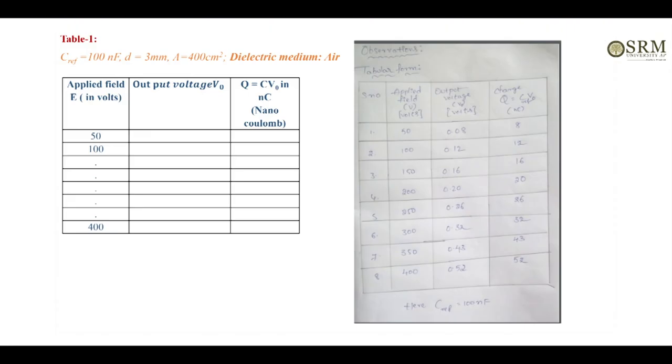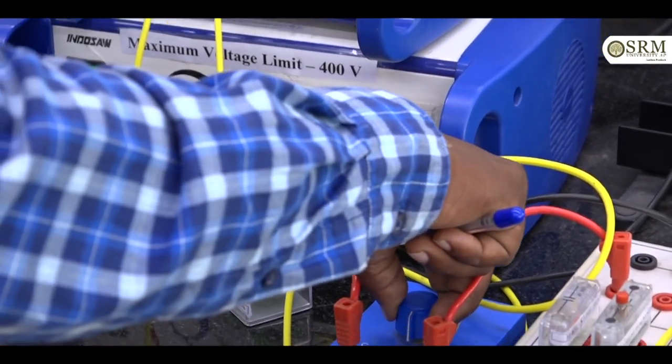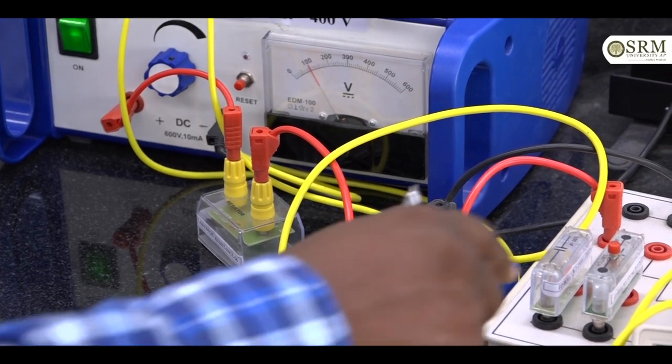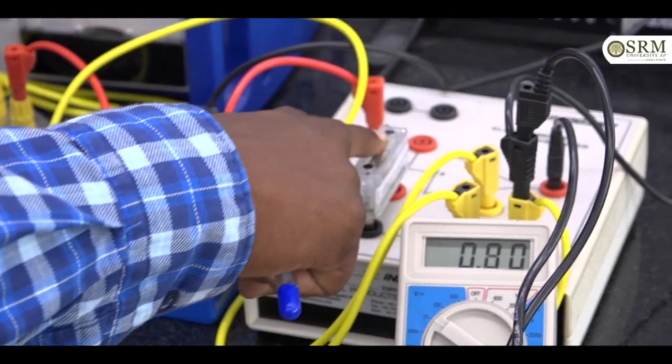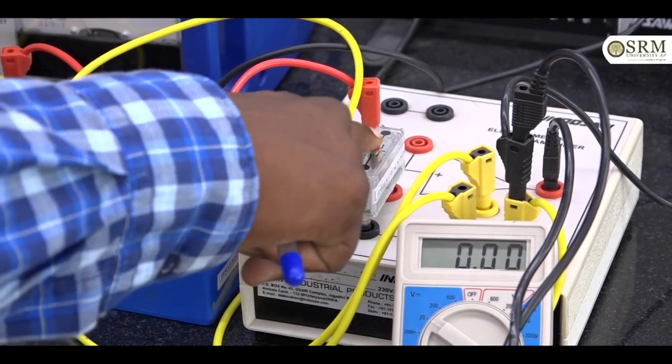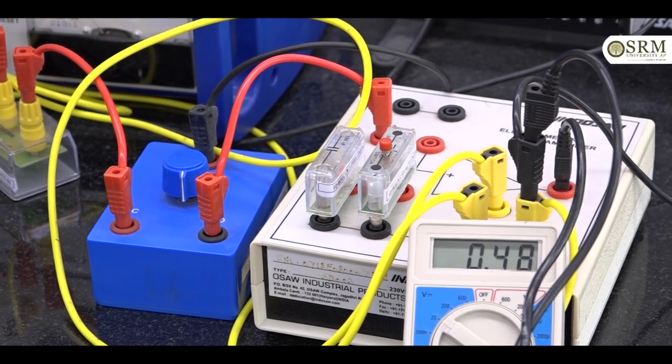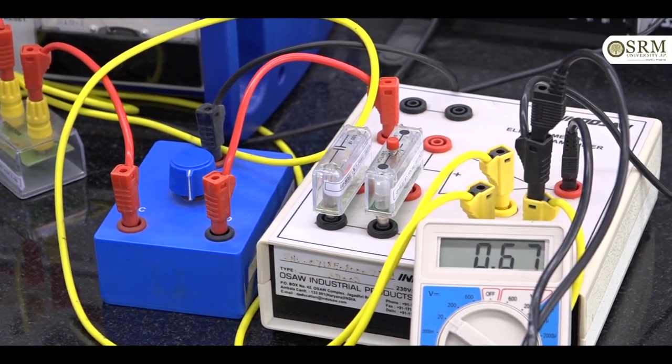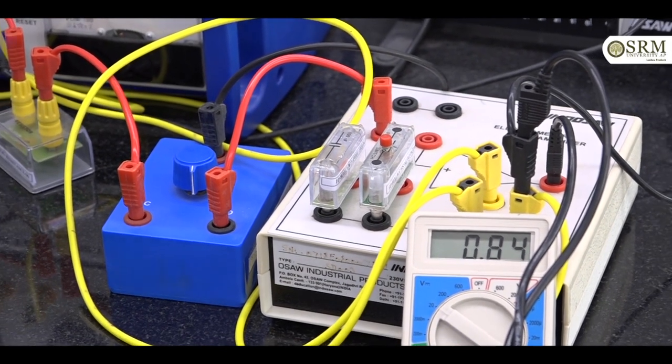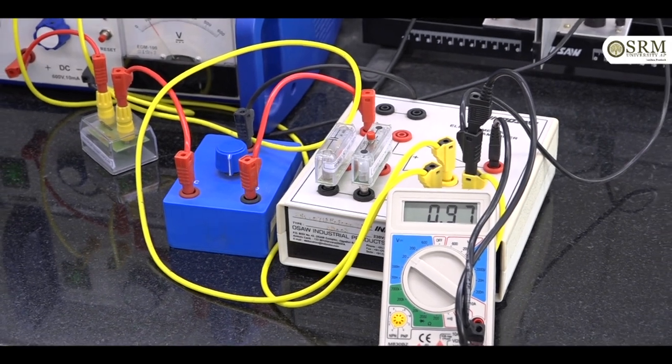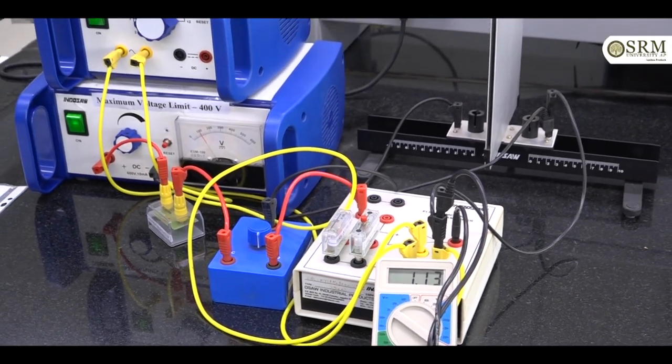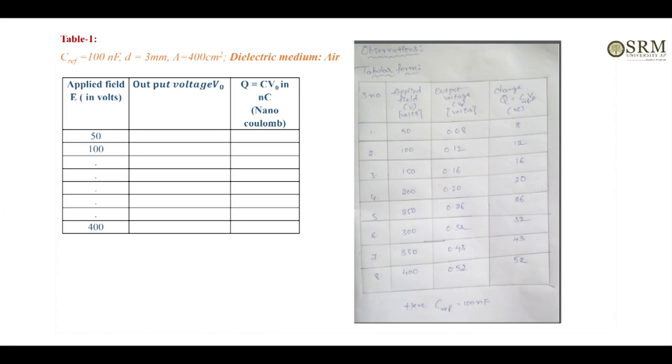After that, repeat the same process for 100 volts. Apply 100 volts, place knob in charging mode and push the switch for 2 to 3 seconds. Then place knob in discharging mode, find the voltage value in multimeter and note down in tabular form. Repeat the process up to 400 volts and note down values in tabular form.